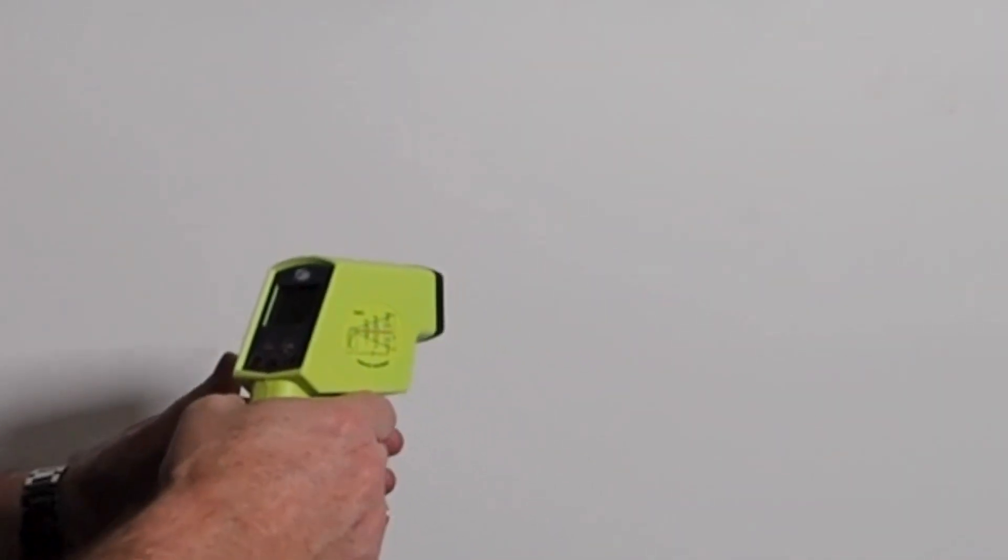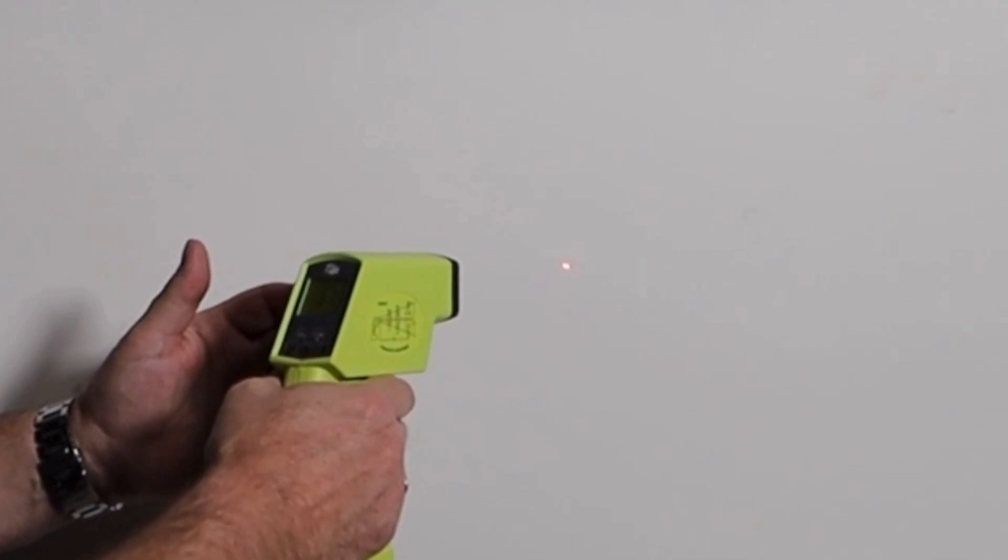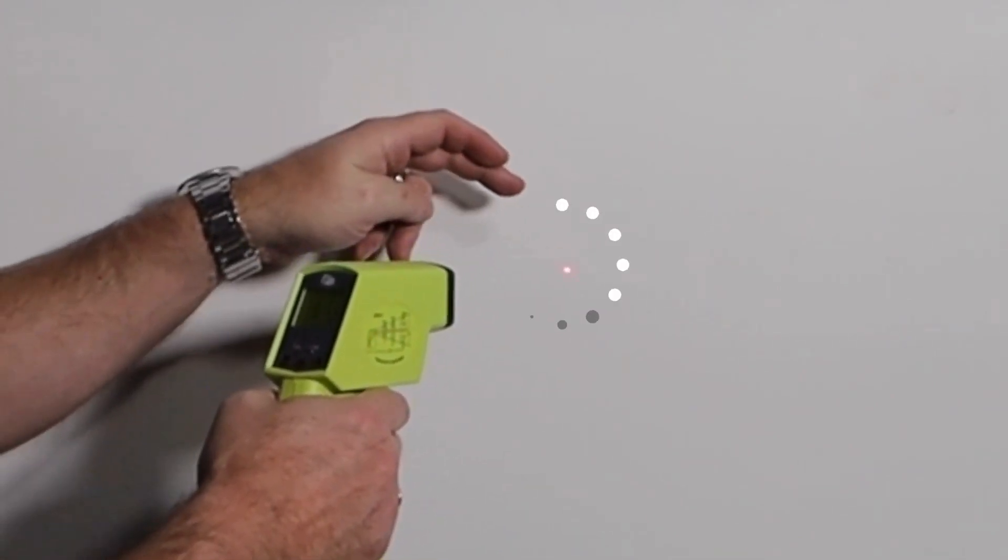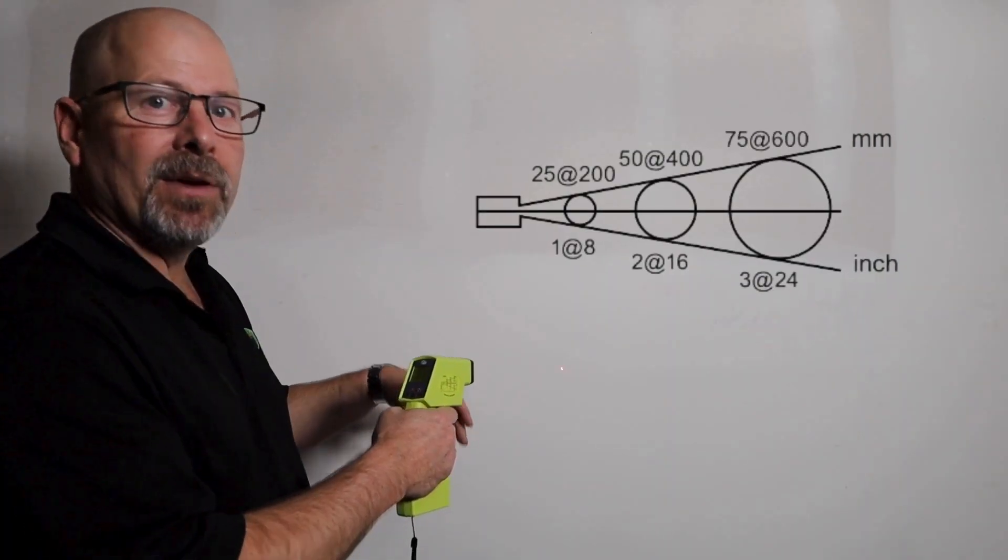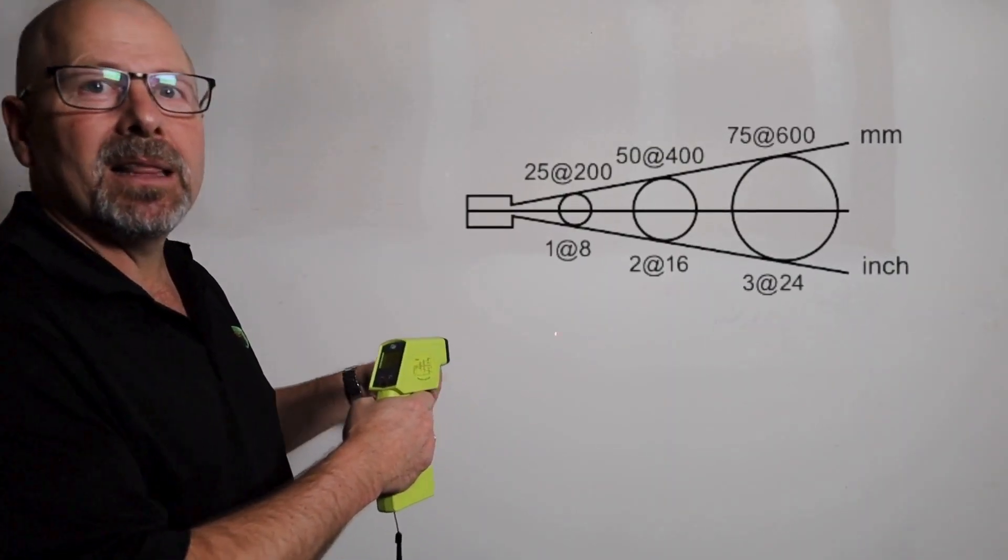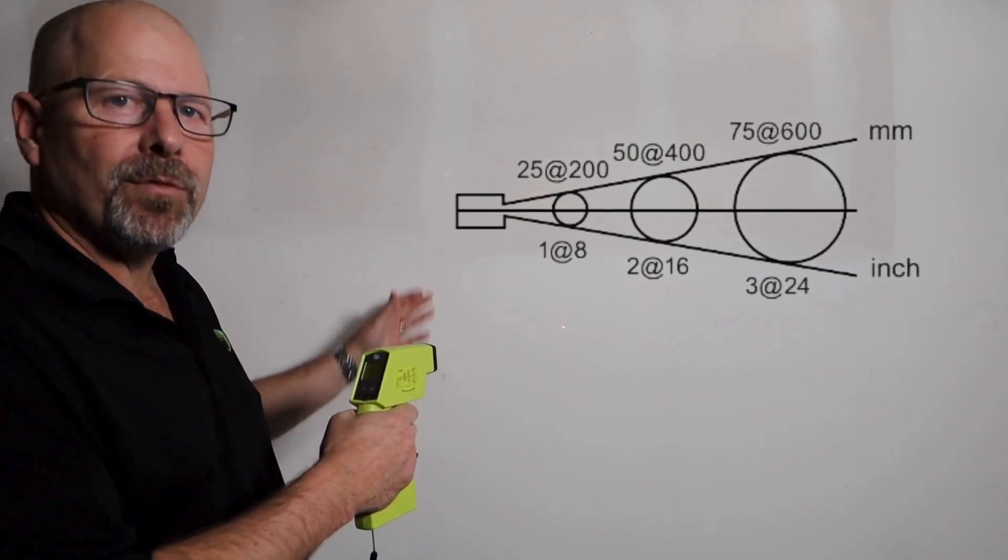What that means is if I'm 8 inches away from my target, I'm actually measuring the average temperature of a 1 inch diameter circle. If I'm 8 feet away, that will take the average temperature of a 1 foot diameter circle.